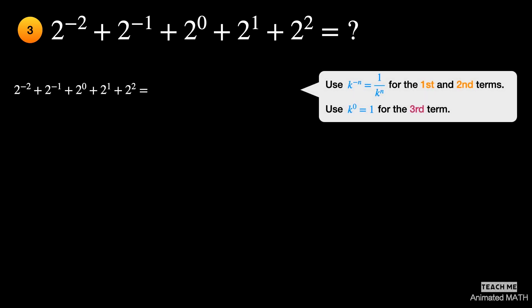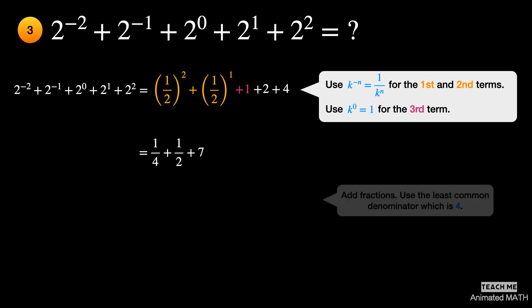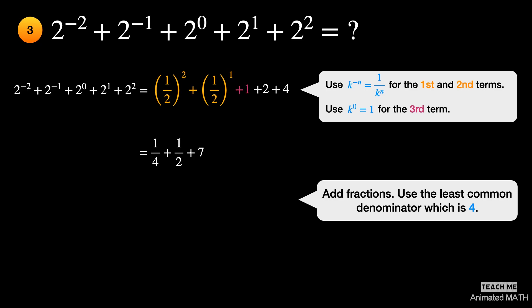Use the 4th property to simplify the negative exponents of the first two terms. Use the 1st property for the 3rd term, since the exponent is 0. Expand the last two terms. Add the fractions and whole number using the least common denominator of 4. The final answer is 31 over 4.